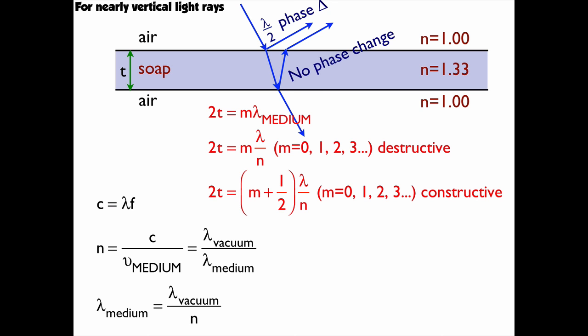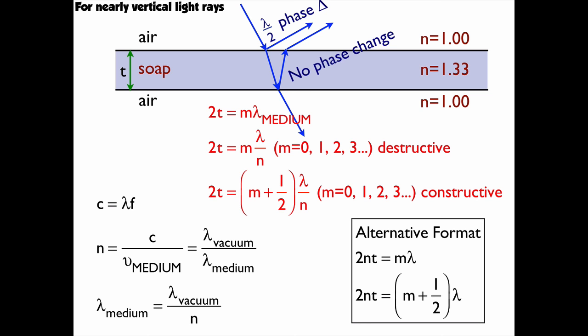Now just so you know, there is an alternative format of writing this equation. You can multiply both sides by the index of refraction, and you get 2nt is equal to m lambda, and 2nt is equal to m plus a half lambda. But to me, this equation really doesn't tell the story of the fact that you have to change the wavelength in the substance, which is why it's lambda over n.